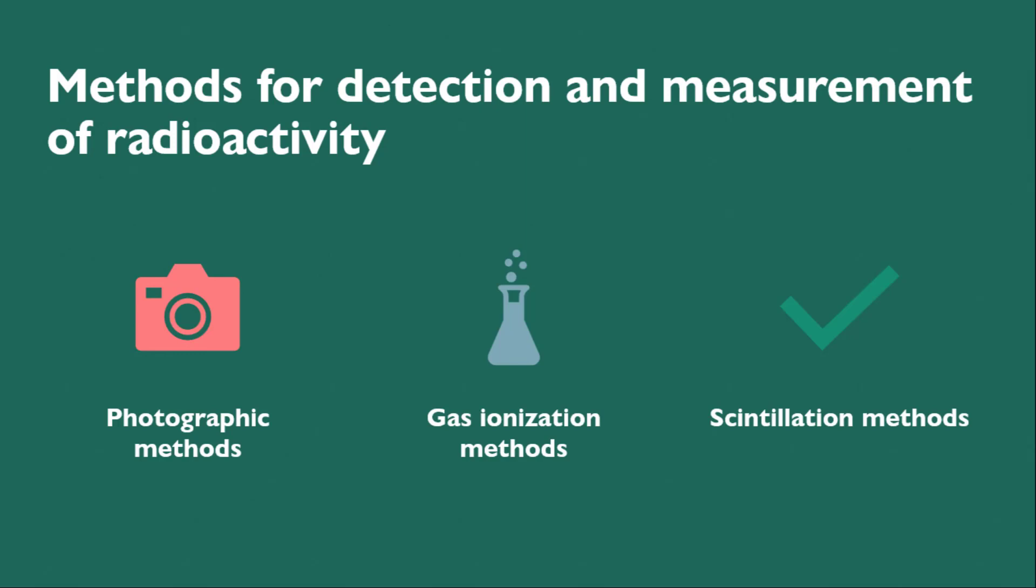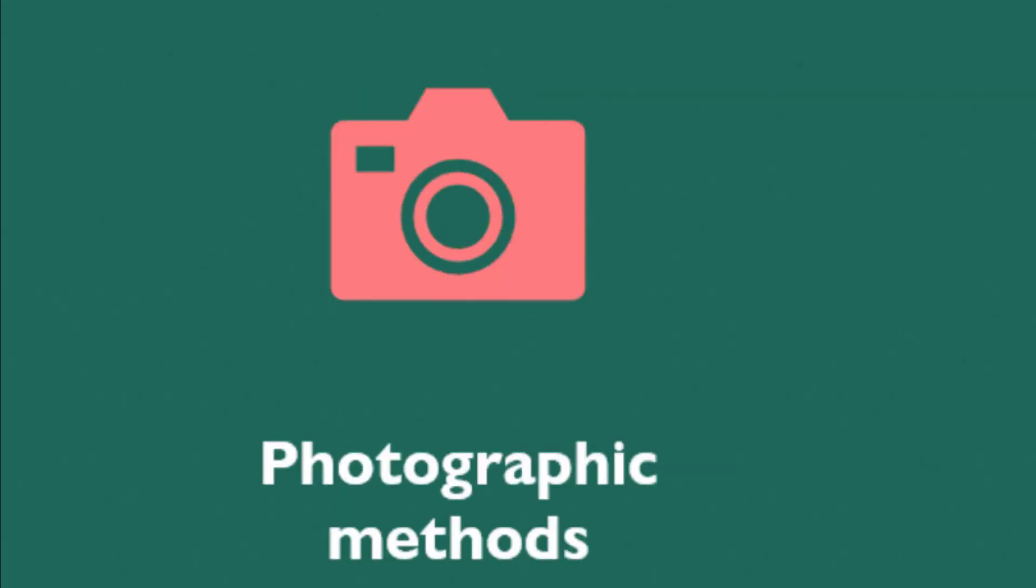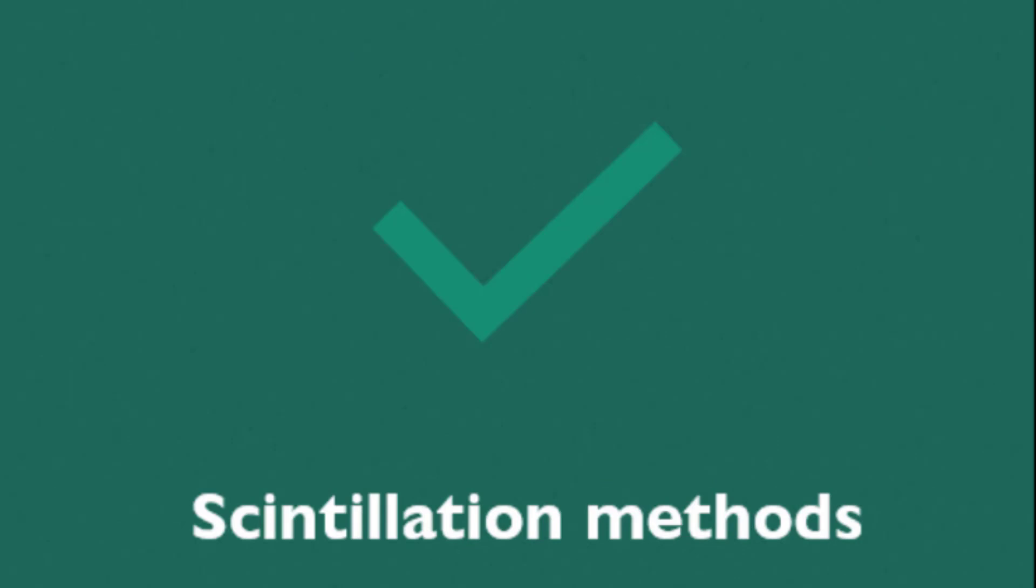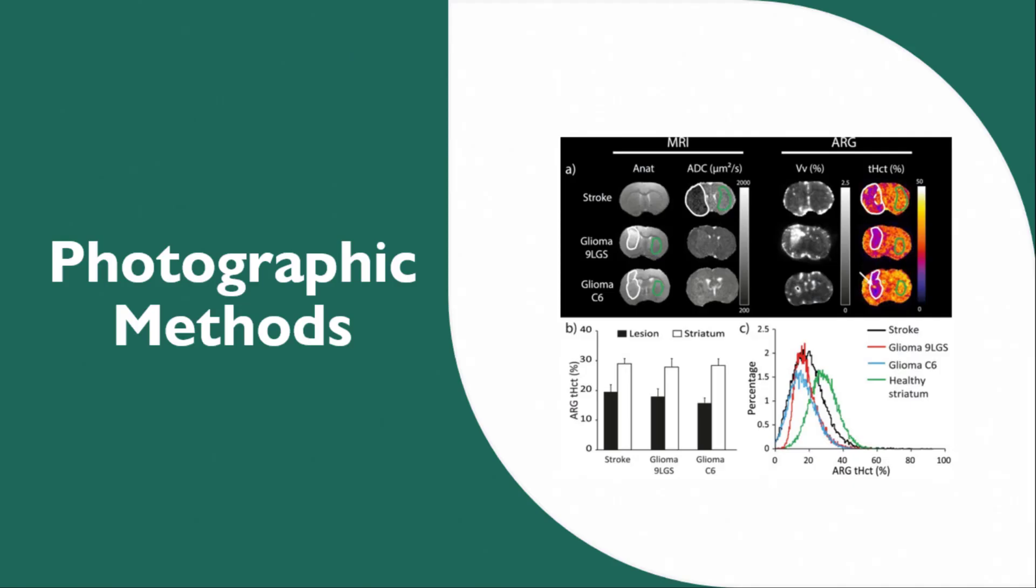There are three main methods for detection and measurement of radioactivity: photographic methods, gas ionization methods, and scintillation methods. First is photographic methods.